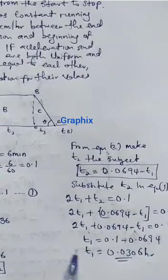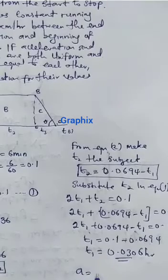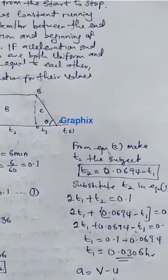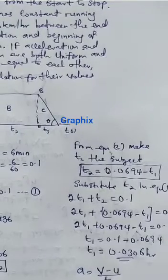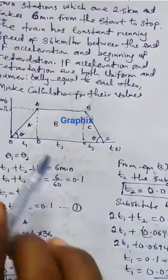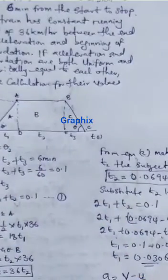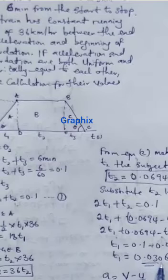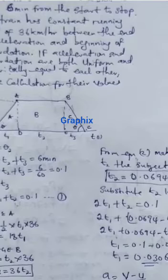Our acceleration now will give me final velocity V minus initial velocity U all over T1. We're talking about the first stage here. That will give me 36 minus 0 over 0.0306. So my acceleration will now give me 1176.47 meters per second squared. Thank you very much.